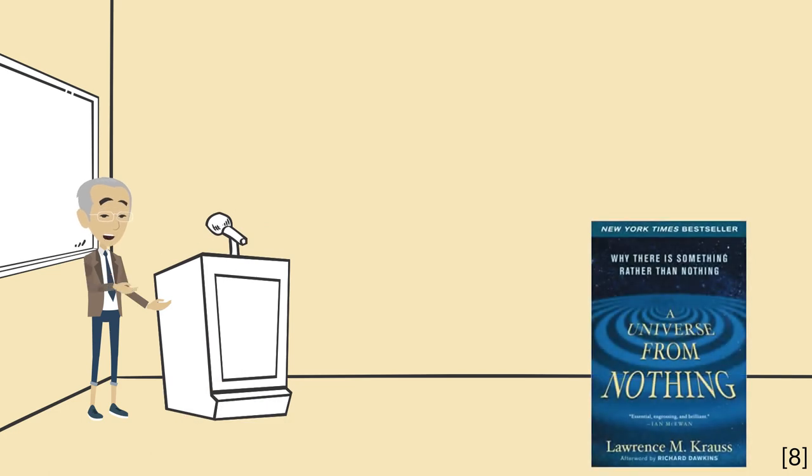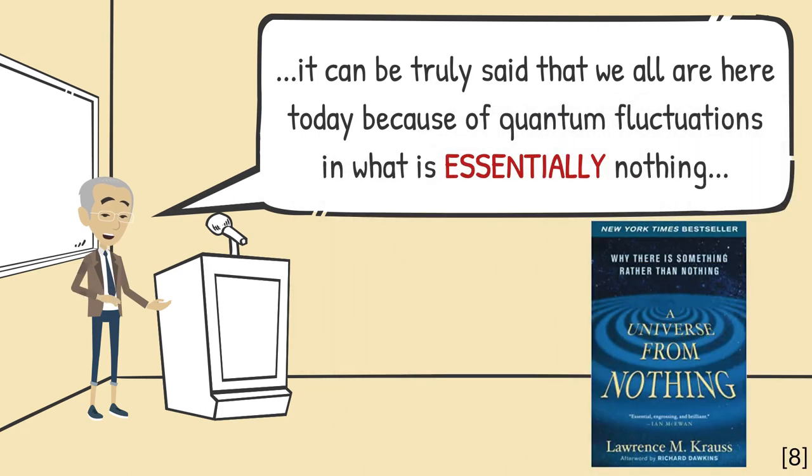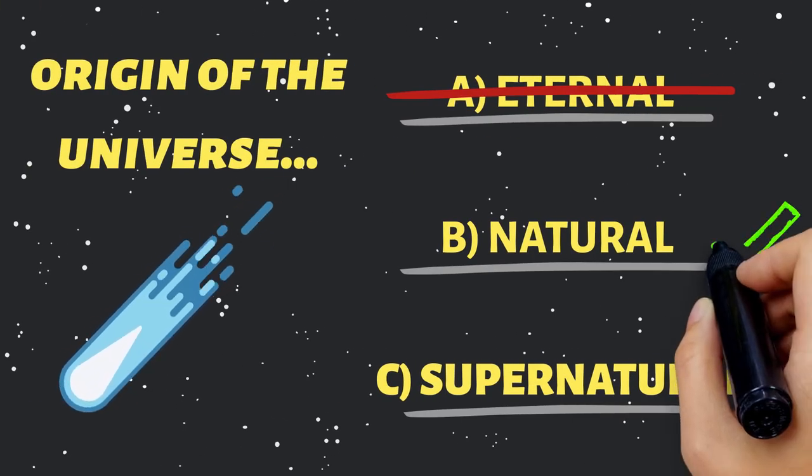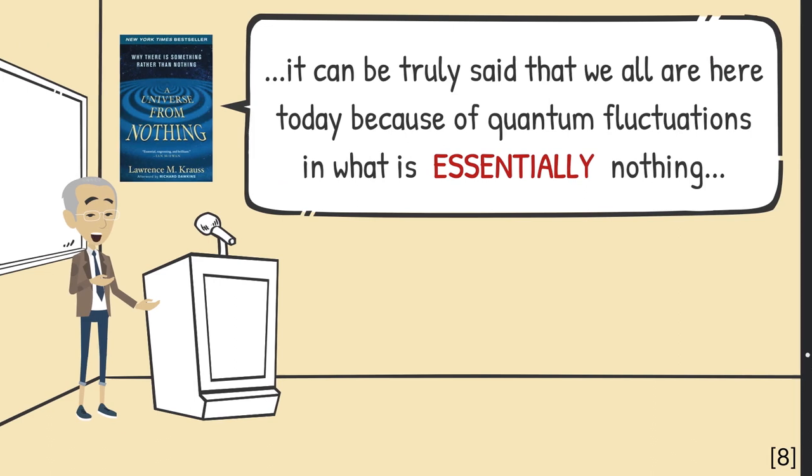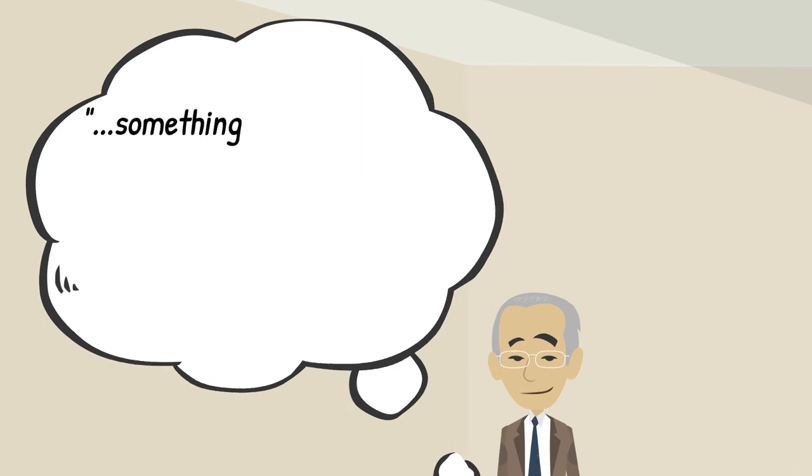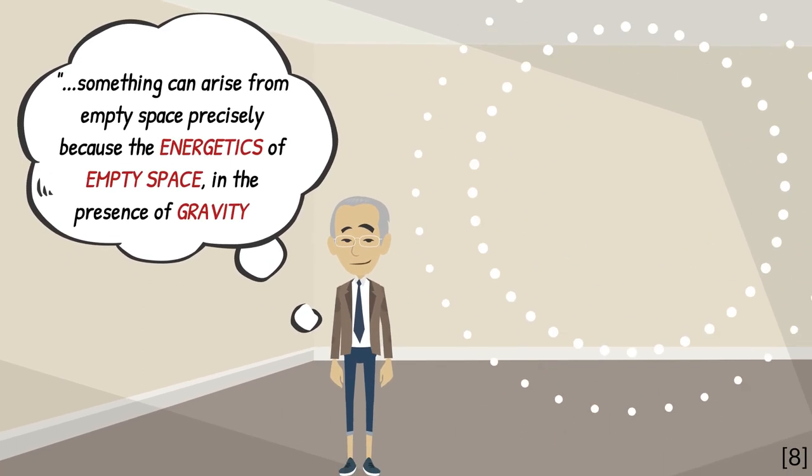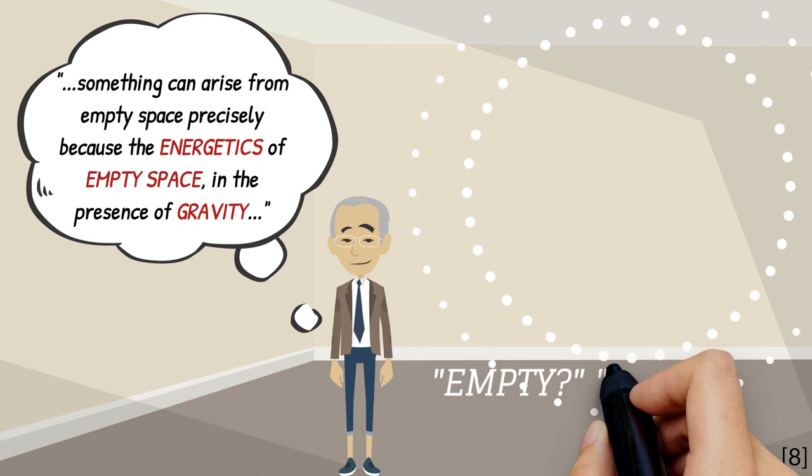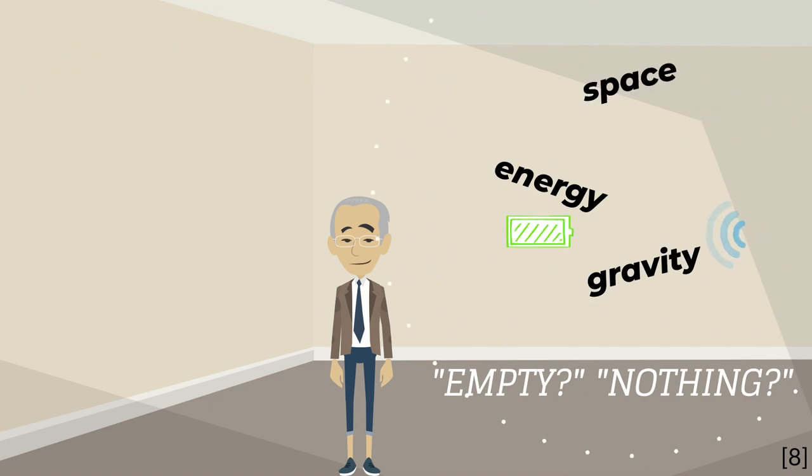Lawrence Krauss is a theoretical physicist and author of A Universe From Nothing. He says, it can be truly said that we all are here today because of quantum fluctuations in what is essentially nothing. There you have it, a scientific explanation for the origin of the universe. But let's take a look at that one more time. What does he mean when he says essentially nothing? He goes on to say, something can arise from empty space precisely because of the energetics of empty space in the presence of gravity. He's using words like empty and nothing, but he's assuming the presence of energy, gravity, space, and quantum fluctuations.